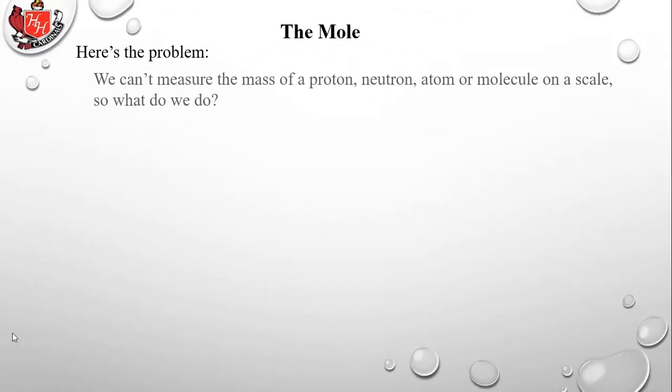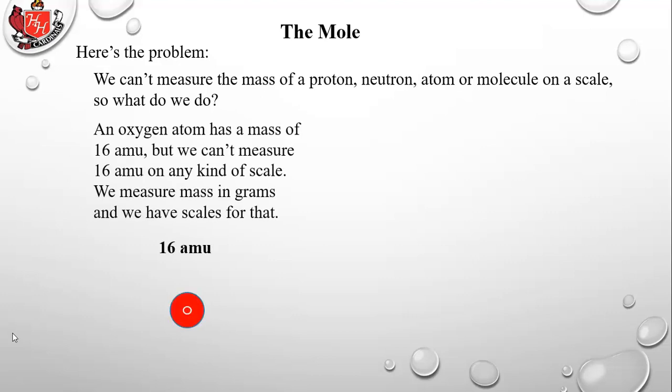Here's the problem: we can't measure the mass of a proton, neutron, atom, or molecule on a scale that small. An oxygen atom has a mass of 16 amu, but we can't measure 16 amu on any scale or balance we have in the lab. So we measure mass in grams — all the scales we have are calibrated in grams.